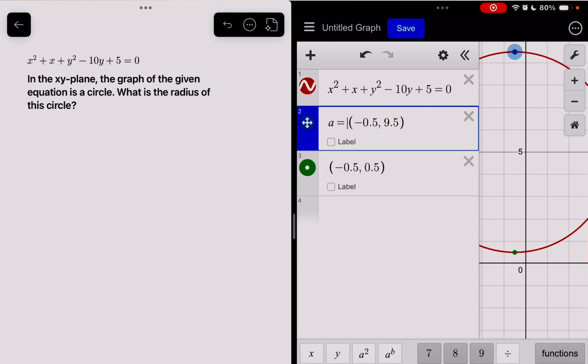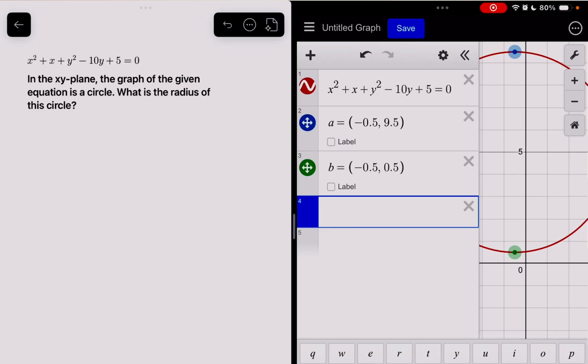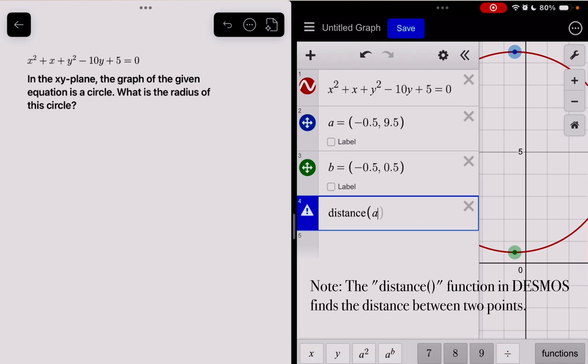Let's set this equal to A, and let's set this point equal to B. Now this next part is pretty important, so listen up. Distance A, B.